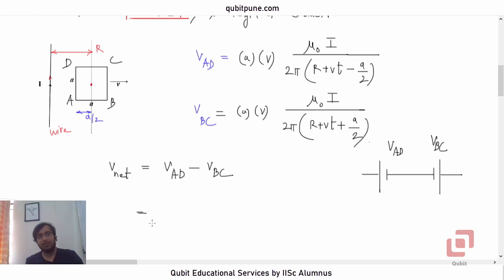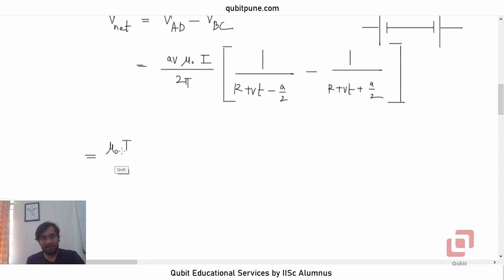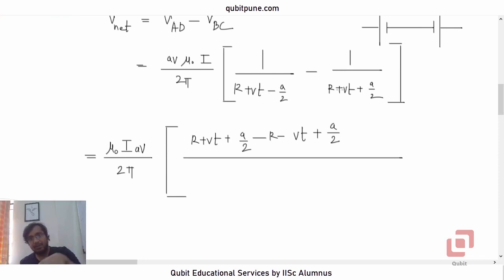Let us now take all the terms that are common in both the expressions. So, AV will be there, mu naught will be there, I will be there and 2pi will also be there. mu naught I, AV upon 2pi. Inside the bracket, what will we have? 1 upon R plus VT minus A by 2 minus 1 upon R plus VT plus A by 2. And now, what we need to do is simplify. mu naught I, AV upon 2pi. Now, let us take the LCM. So, what will happen? R plus VT plus A by 2 and then minus this denominator. So, minus R minus VT plus A by 2.